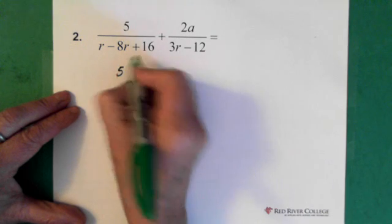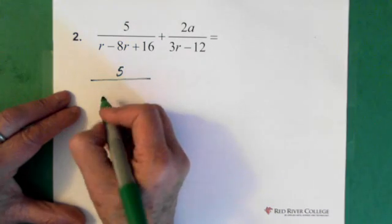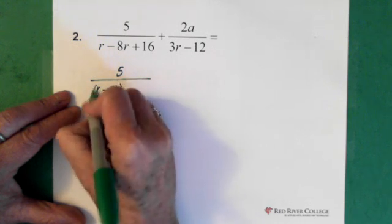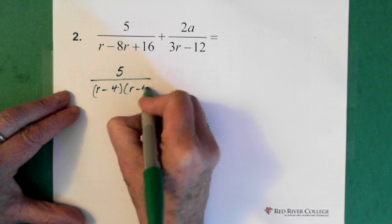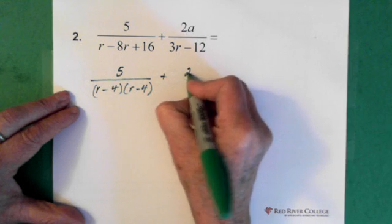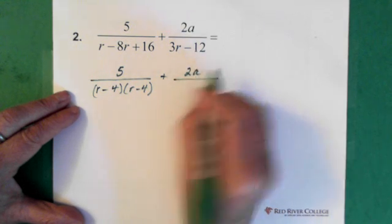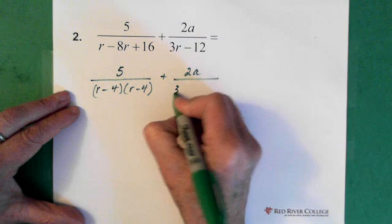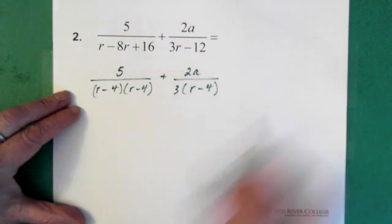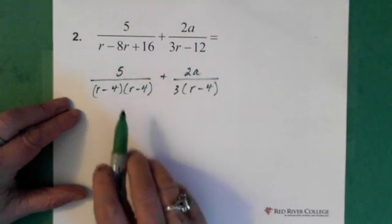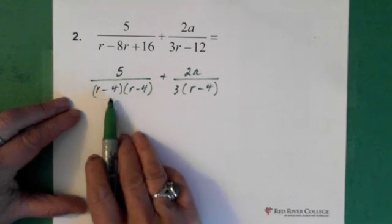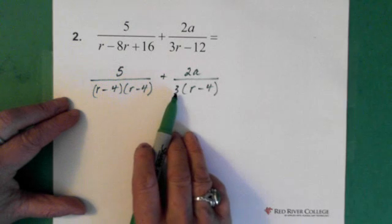So we have 5. Here we have (r - 4)(r - 4). Added to 2a. We factor this as well, so we pull out the 3 and we're left with (r - 4). Alright. So now we can see that the denominator is (r - 4)², so (r - 4)(r - 4) times 3.